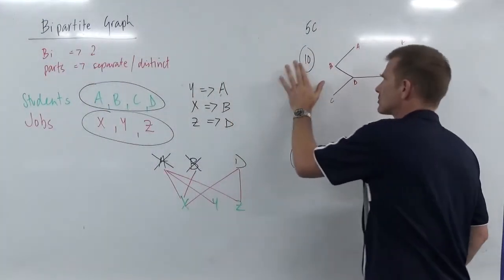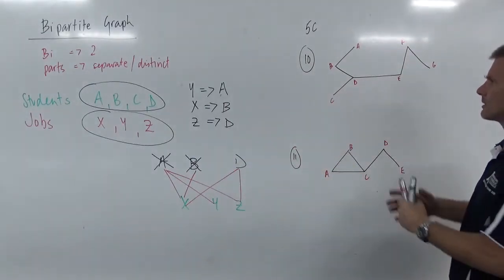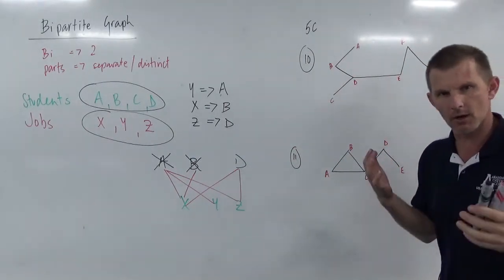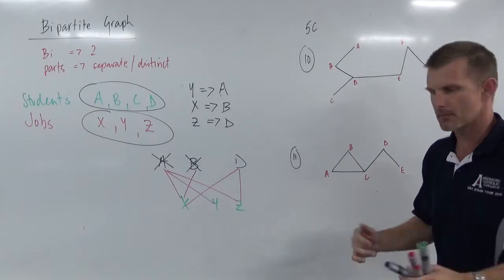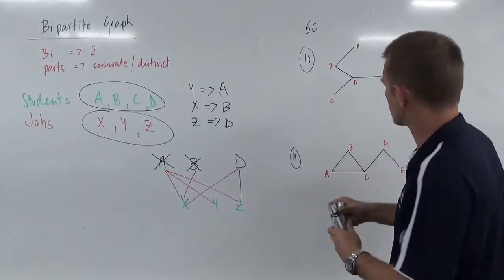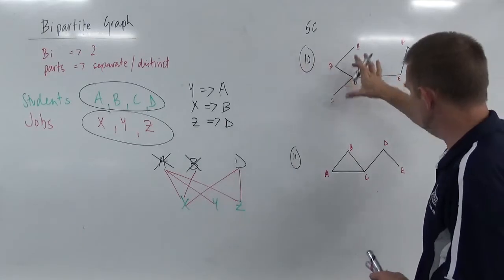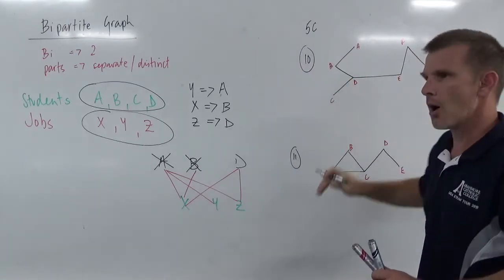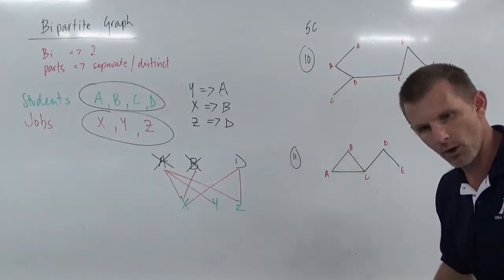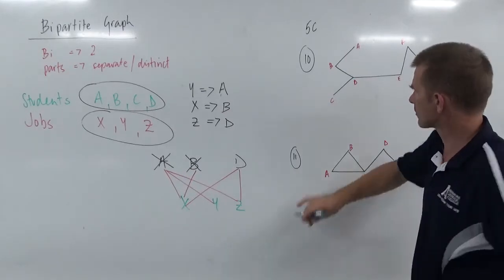Out of the book, question 10 and question 11 are asking you to show whether this could be a bipartite graph or not. Here's the trick: take a line through your diagram, always keeping one group to the left and one group to the right.